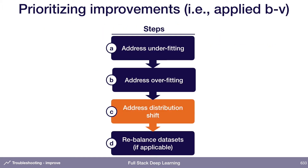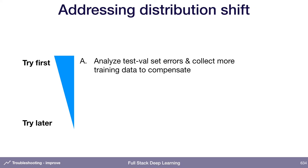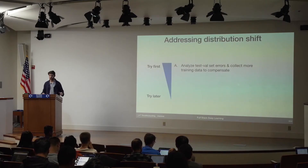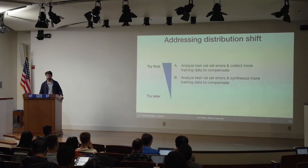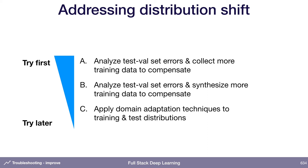Once our training error and validation error are both in the region we want, the next thing is to try to address any distribution shift. There are fewer strategies here, but some things you can do are looking at the errors your model makes on your test validation set — this tends to be a very manual process. You look at those errors and ask what generalizable mistakes your model is making, then figure out how to collect more data to help the model handle those cases. You can also synthesize more training data instead of collecting it, or apply domain adaptation techniques — though these are still a little more in the research realm than production-ready.